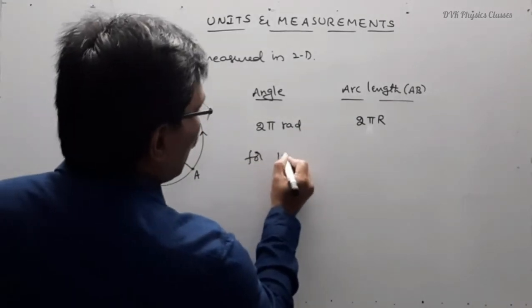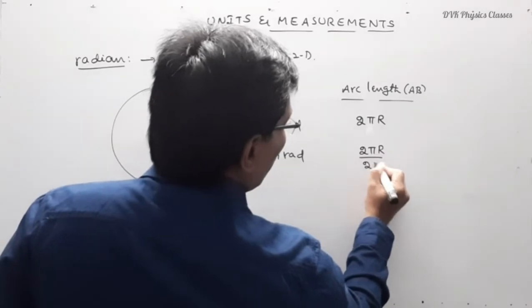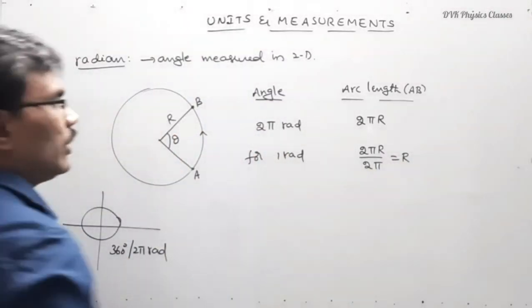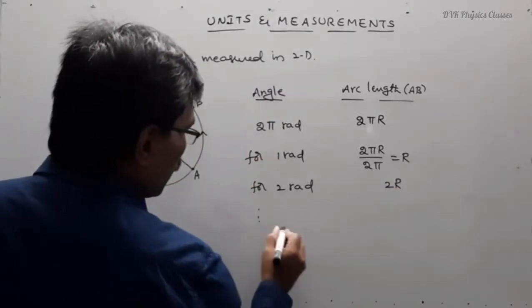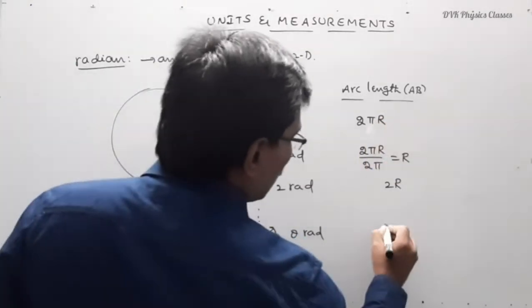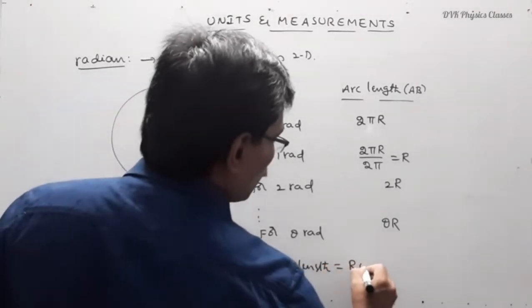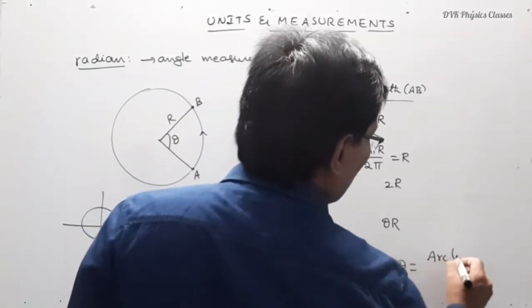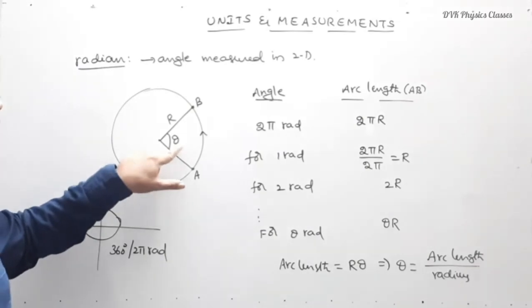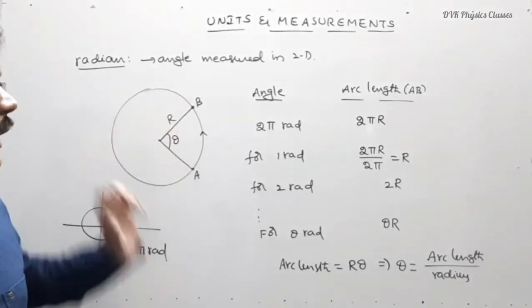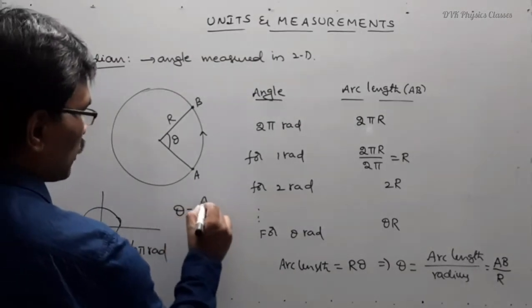For one radian, what should be the arc length? Total arc length divided by total angle gives: 2 pi r divided by 2 pi equals r. So for covering an angular displacement of 2 radians, the linear distance should be 2 times the radius. For theta radians, the arc length is theta into r. So arc length AB equals r into theta, which means theta equals arc length divided by radius.